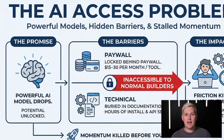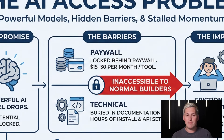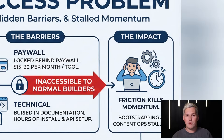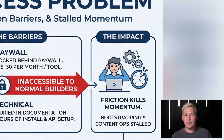Here is the problem. Every time a powerful AI model drops, it is locked behind a paywall or buried in technical documentation that makes it inaccessible to normal people trying to build something. You either pay $15 to $30 a month per tool, or you spend hours figuring out installations and API configurations. For someone bootstrapping a freelance business or trying to launch a content operation, that friction kills momentum before you even start.